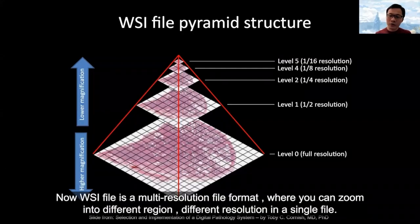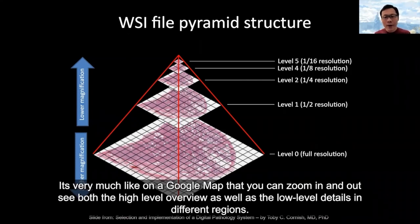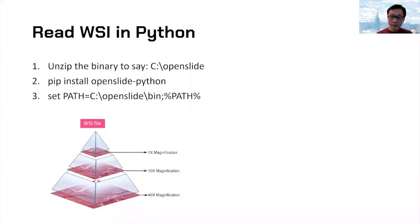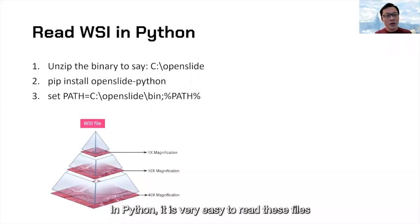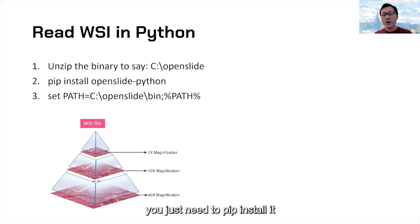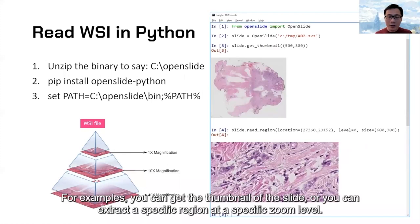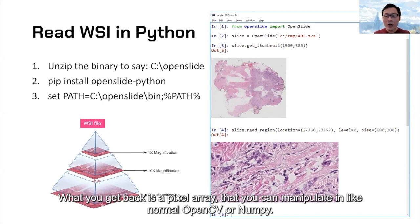A WSI file is a multi-resolution file format where you can zoom into different regions at different resolutions within a single file — very much like Google Maps, where you can zoom in or out to see both the high-level overview and low-level details. In Python, it's very easy to read this file using a great library called OpenSlide. You just pip install it, import it in your code, and you can get the dimensions of the image, extract a specific region at a specific zoom level, and get back a pixel array that you can manipulate like a normal OpenCV or NumPy array.